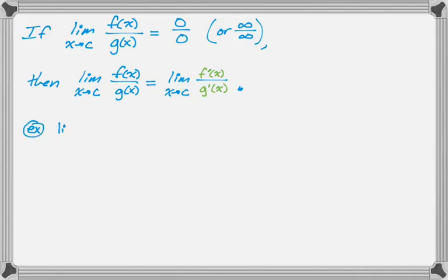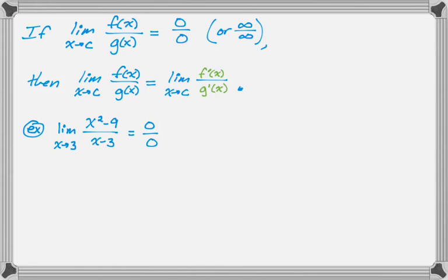The first example is a really simple limit that you would probably immediately think to do by factoring, canceling, and moving on. But I'm going to use L'Hôpital's Rule. First I try to evaluate it directly, and you can see that you get 0 over 0. So now I'm going to apply L'Hôpital's Rule.